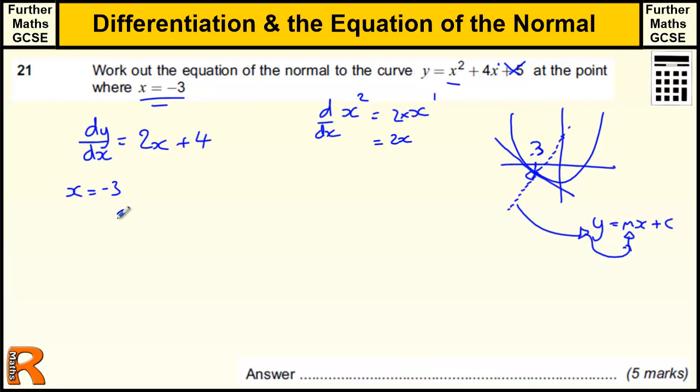dy by dx, which is what we're trying to find. This is the m value, actually not of this normal yet, but this tangent to the curve, is going to be 2 lots of minus 3 plus 4, which is minus 6 plus 4, which is minus 2.